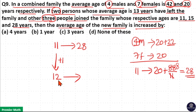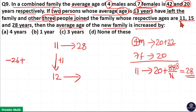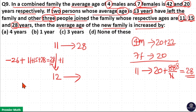Now we have to find the average age of these 12 members. To find this, we have to find the overall increment in the ages of the family. When 2 persons left the family, that means 13 into 2 equals 26 years should reduce from the total age. So minus 26, plus 3 people joined the family — that is, 11 plus 15 plus 28 years joined the family. So overall increment becomes minus 26 plus 11 plus 15 plus 28, which equals 28. That is, the overall increment in the ages of the family is 28.